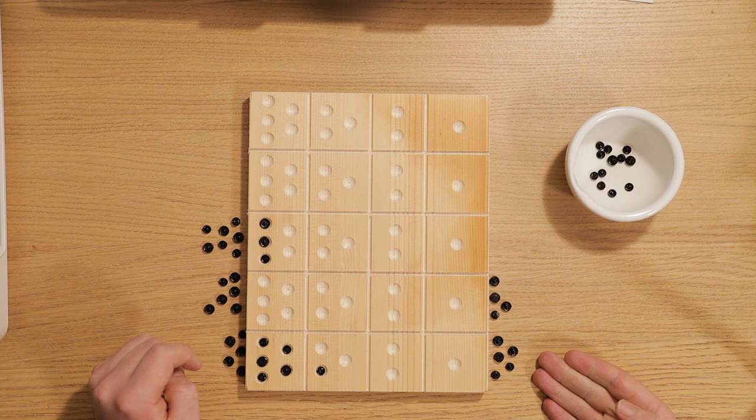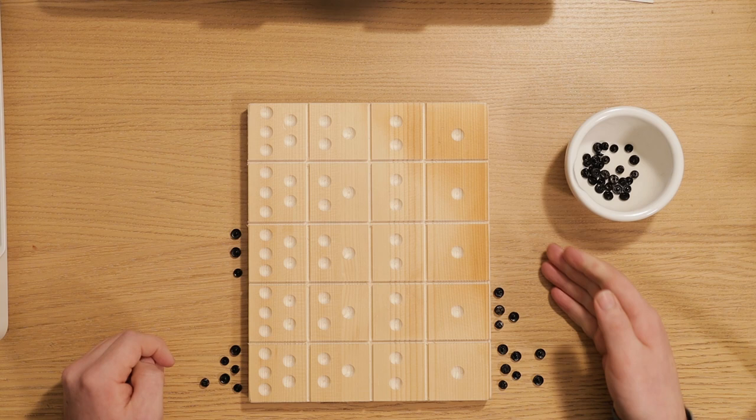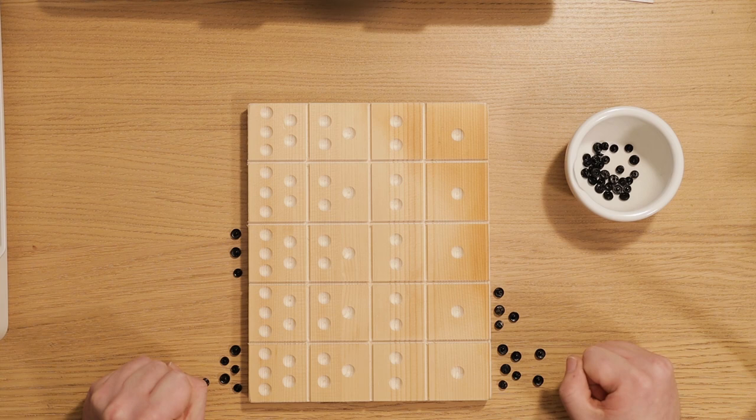So, now we remove these and place 2 more on the right here. It is done. We have 306 right here. And here we have our result, which is 47.